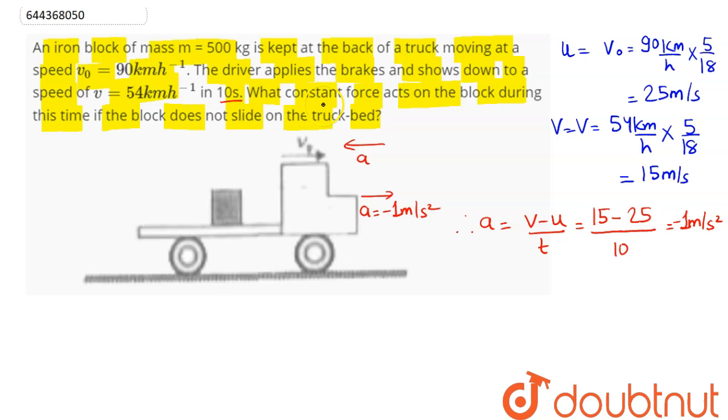Hence the constant force acting on the block during this time, if block does not slide, is given as F equal to m into a. Mass is equal to 500 kg, acceleration we have as minus 1, so this comes as minus 500 newton. The negative sign indicates that force acts opposite to the velocity of the block.